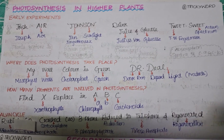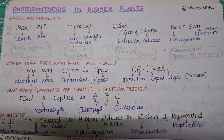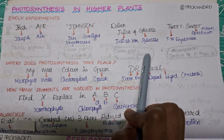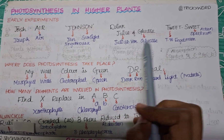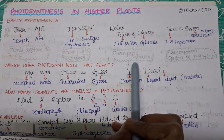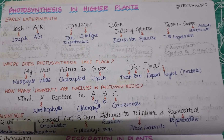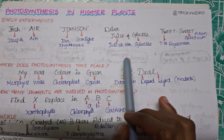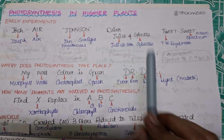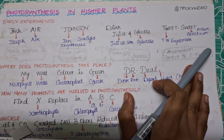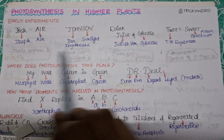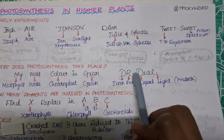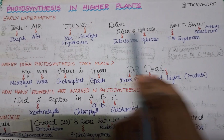The next trick is 'Drink Juice and Glucose' — to overcome the heat, you can drink juice and glucose. Here 'Juice' stands for Julius (von Sachs) and 'Glucose' stays as glucose — no change. From his experiment, we observe that glucose is formed and stored during photosynthesis in the green parts. You can refer to your NCERT for full details.